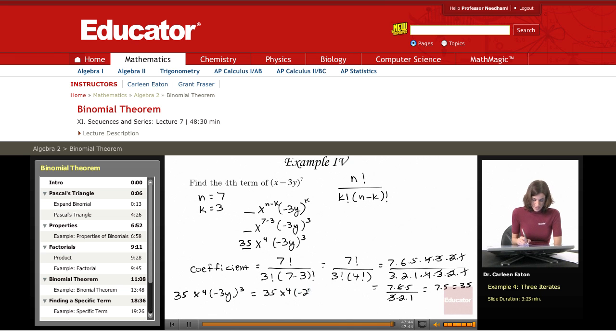So, it's negative 27y cubed. So, it's time to get out your calculators and figure out 35 times negative 27, or multiply it out if necessary. And you'll find that that equals negative 945x to the fourth, y cubed.